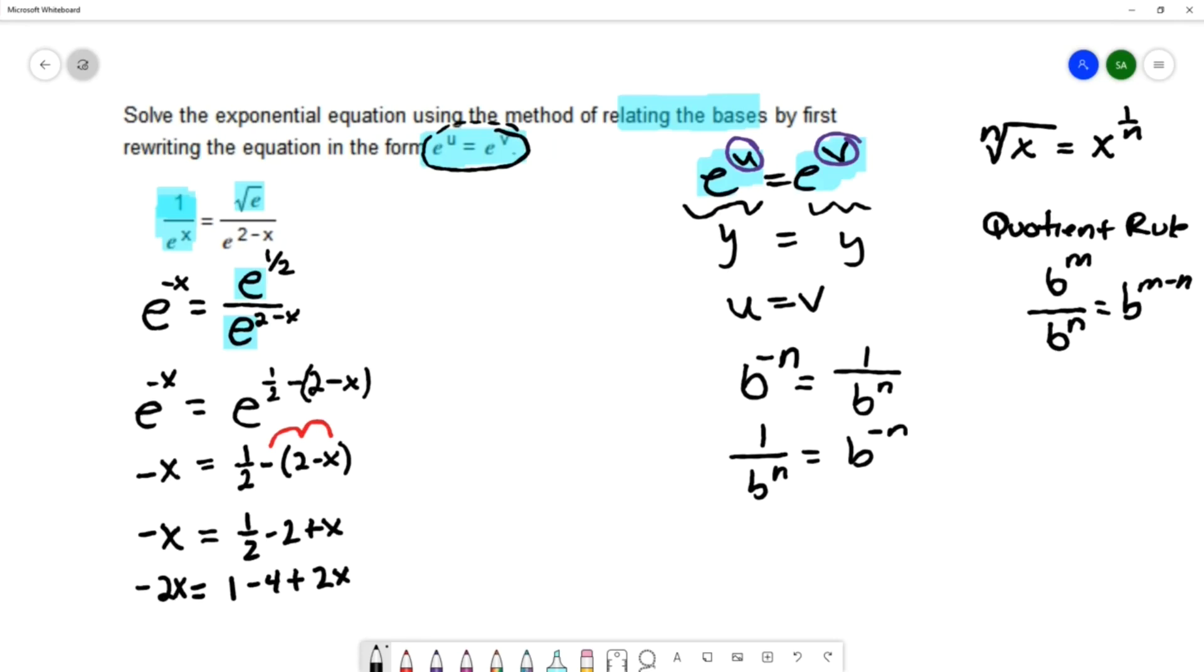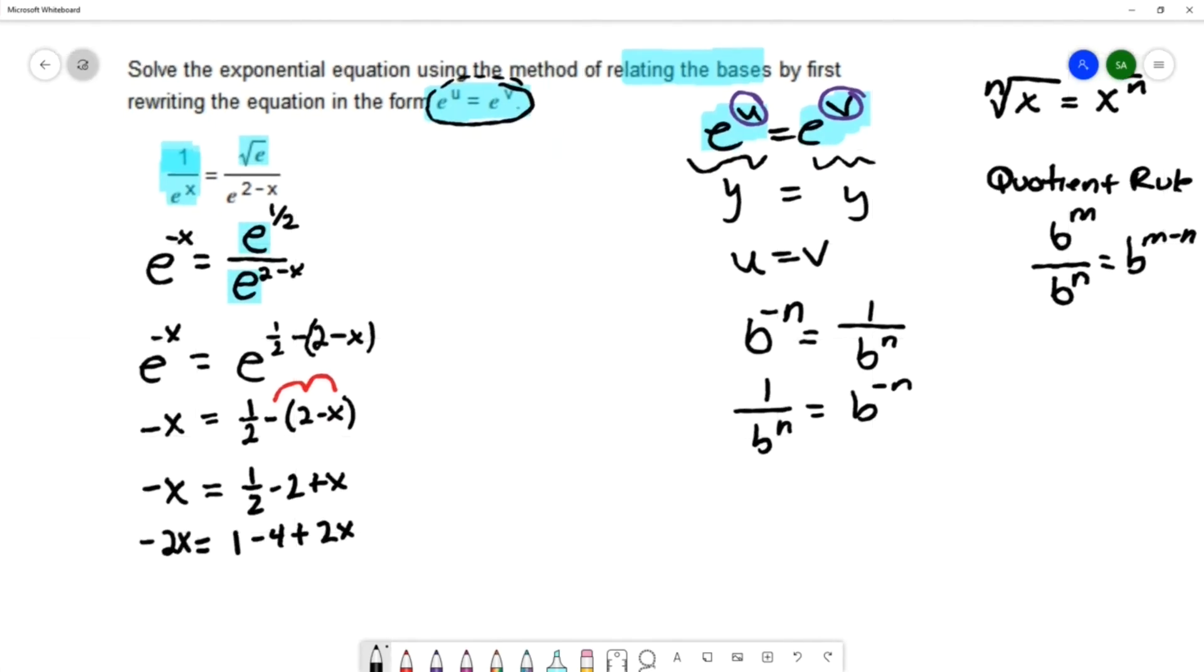That's what I get by multiplying by 2 on every term. And now I can combine like terms. I have -2x = -3 + 2x. I will subtract 2x on each side. And that will give -4x = -3. Divide by -4 on both sides. And we have x = 3/4.